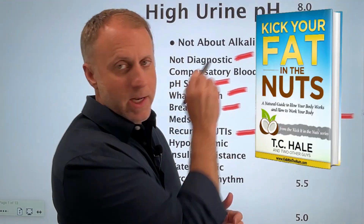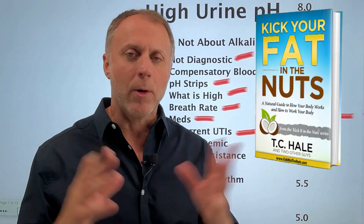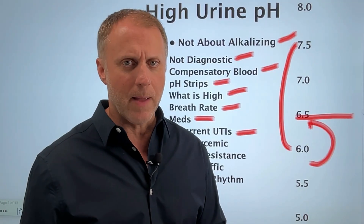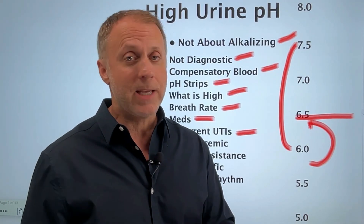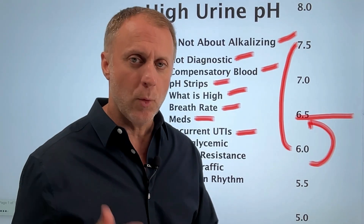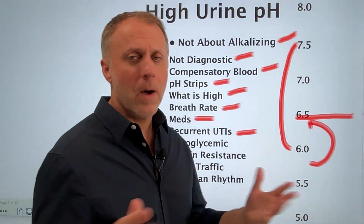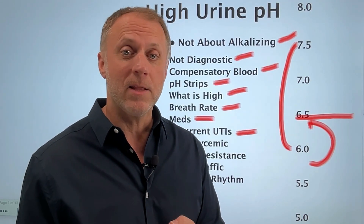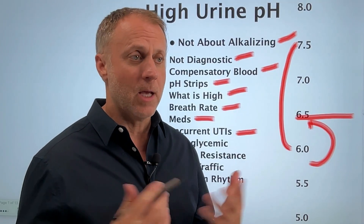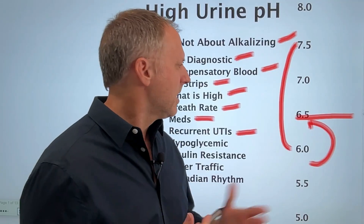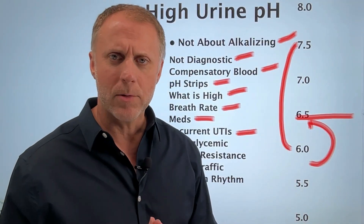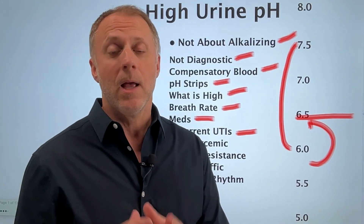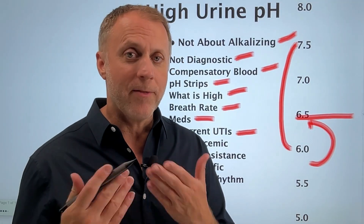Chapter 10 of my book 'Kick Your Fat in the Nuts' goes through how to run a lot of these simple self-tests and understand what you're looking at with different pH readings. The book is available on Amazon, but I'll put a link in the description so you can download it for free. One insight is that there are supplements that can help lower urine pH: vitamin C in the form of ascorbic acid, vitamin B6, and sometimes magnesium. Not every supplement is right for every person, which is why we teach people to look at their bio-individuality.